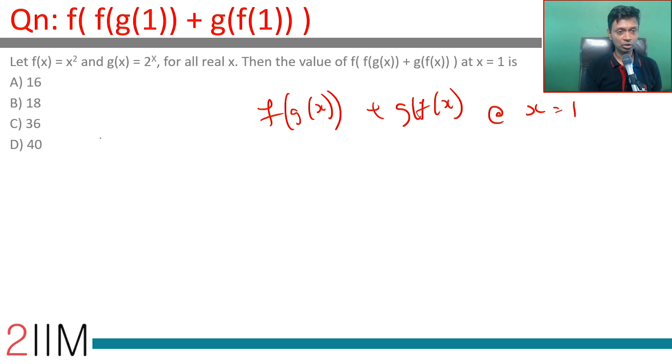So g(1) is 2^1 which is 2, and f(1) is 1² which is 1. This becomes f(2) + g(1). We're substituting x equals 1, so g(1) is 2 and f(1) is 1.